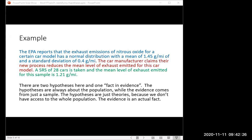Here's an example. The Environmental Protection Agency reports that the exhaust emissions for a certain car model has a normal distribution with a mean of 1.45 grams per mile of nitrous oxide and a standard deviation of 0.4 grams per mile. But then the car manufacturer claims their new process reduces the mean for this car model. Some data is collected. You get a simple random sample of 28 cars of this particular model and you measure their exhaust and the sample mean turns out to be 1.21 grams per mile.